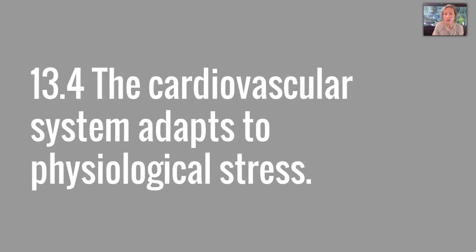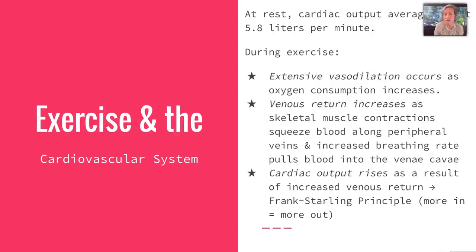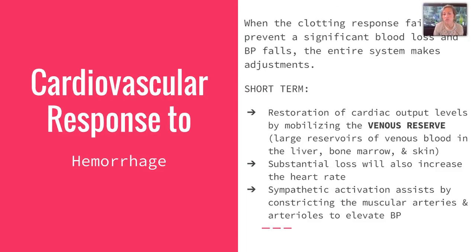Section 13.4 talks about how we adapt to physiological stress. One of those stresses is exercise. During exercise, we have extensive vasodilation, venous return increases, and cardiac output rises as a result of increased venous return — this has to do with the Frank-Starling principle: more blood in, more blood needs to go out. Cardiovascular response to hemorrhage occurs when clotting responses fail to prevent significant blood loss and blood pressure falls, causing the entire system to make adjustments.